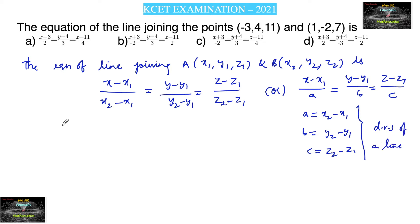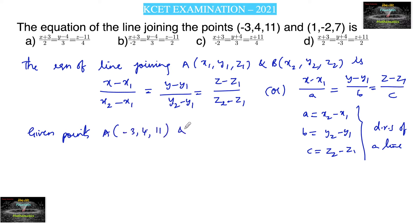Now, the given points are: A(-3, 4, 11) and B(1, -2, 7). Say the first point is (x1, y1, z1) and the second point is (x2, y2, z2).